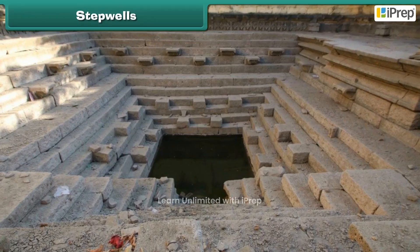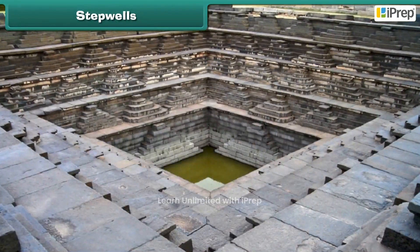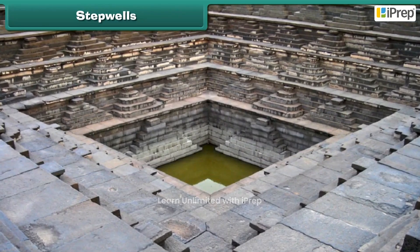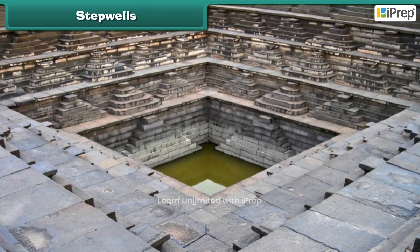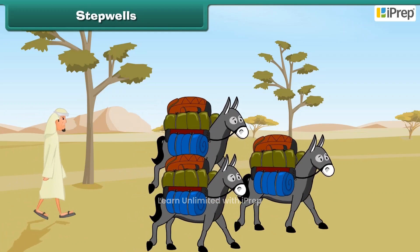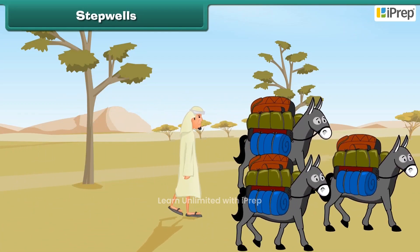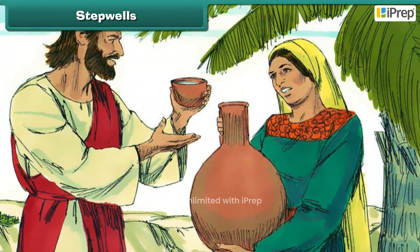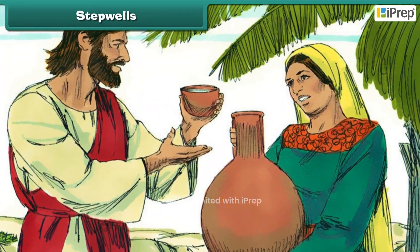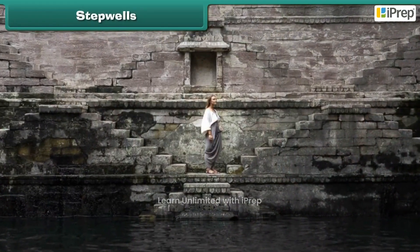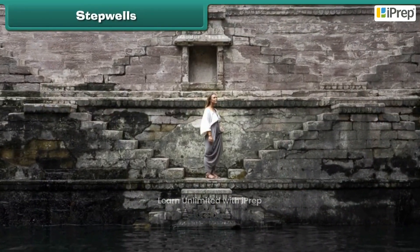A step well is a multi-storied well in which water is reached by descending a set of steps. Long ago, people used to make long journeys with their caravans of animals and goods. People felt it was a good thing to give water to thirsty travellers, and thus they built many beautiful step wells.